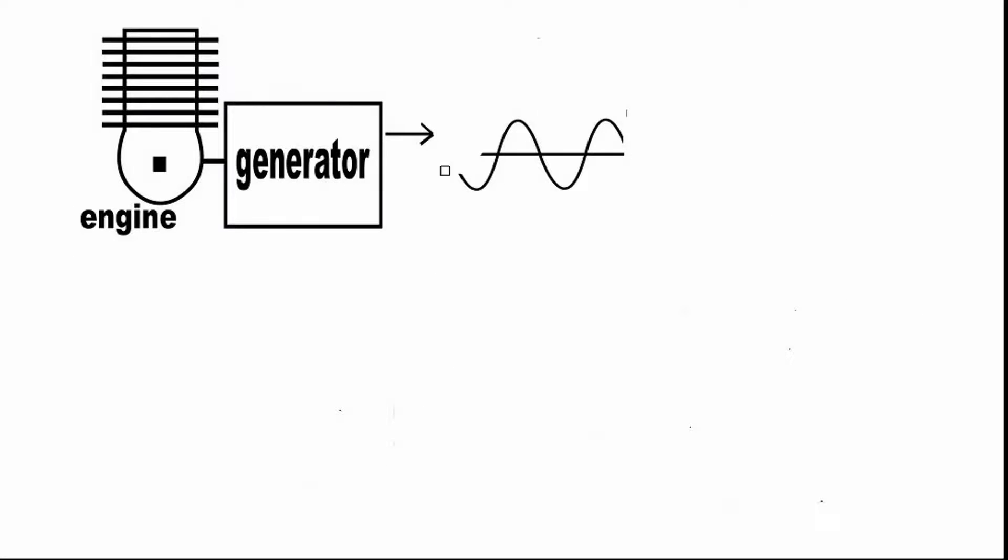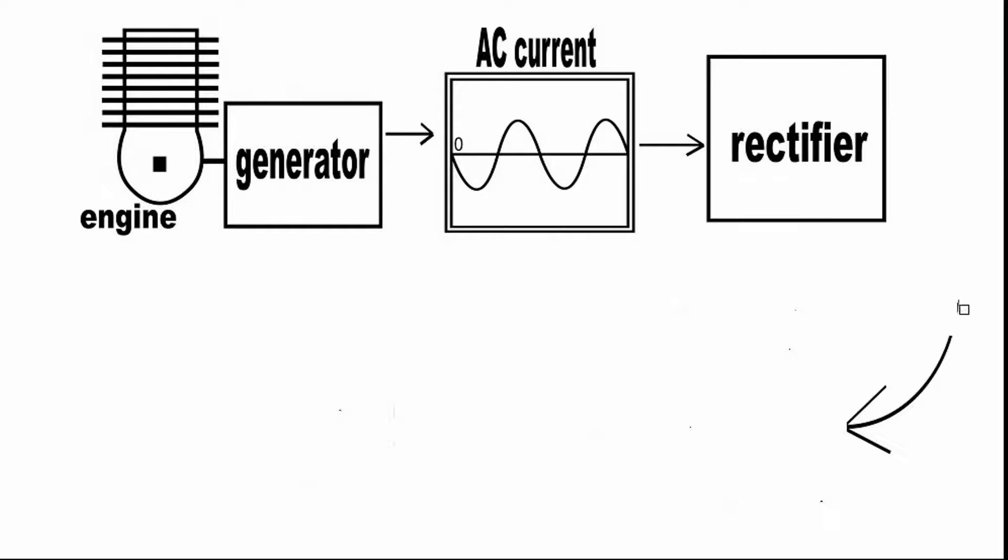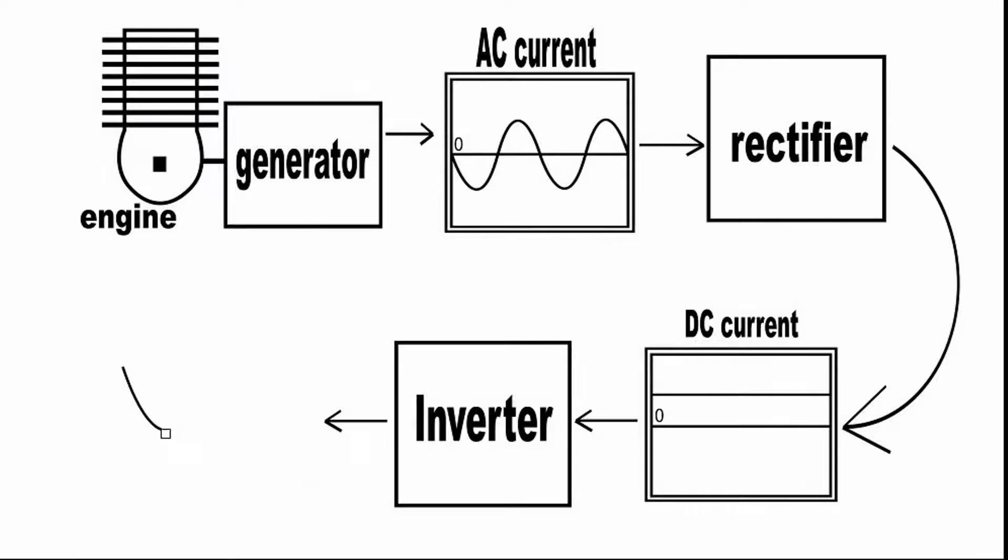The inverter generator generally outputs AC current, like most conventional generators, but the current is then converted to DC current. An inverter module then turns the DC current back into standard 120-volt and 60-Hz AC current.